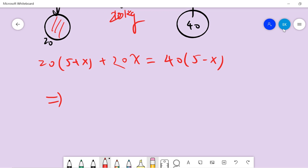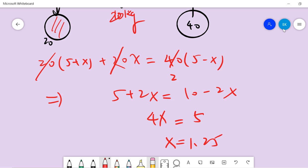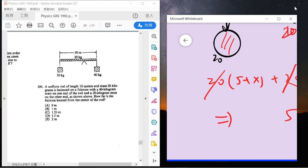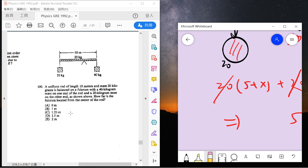I divided by 20 from the left-hand side and right-hand side, which gives x equals 1.25 meters. So which one is the answer? We solved it, right? The answer should be 1.25, which is C.